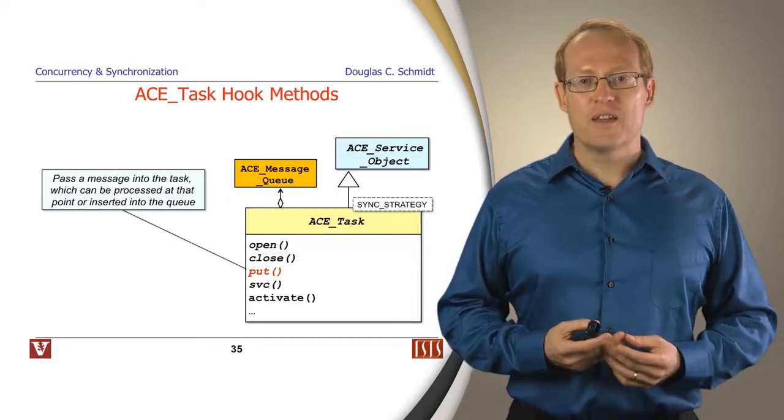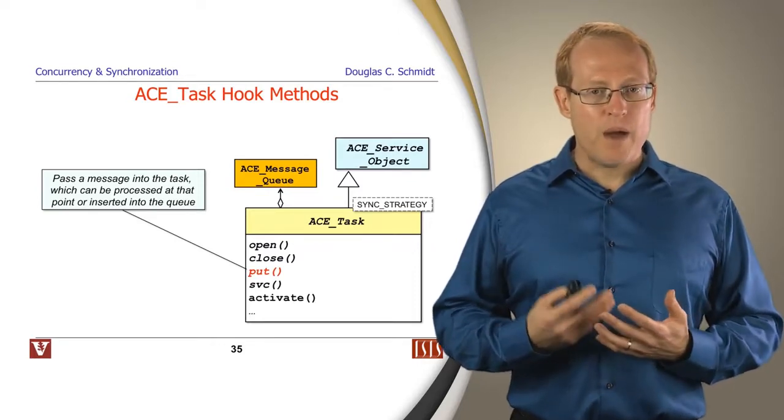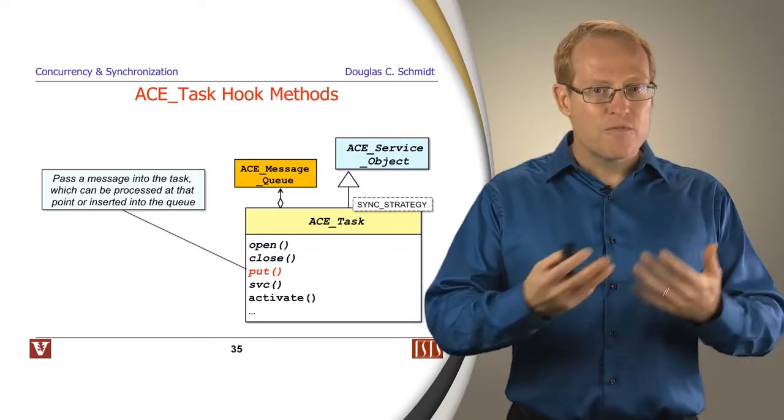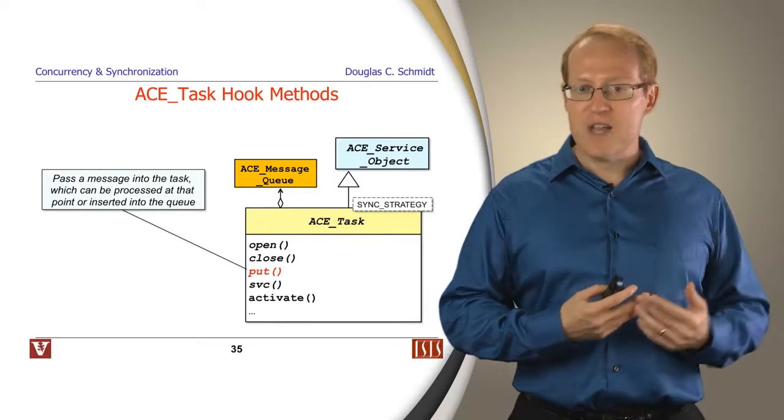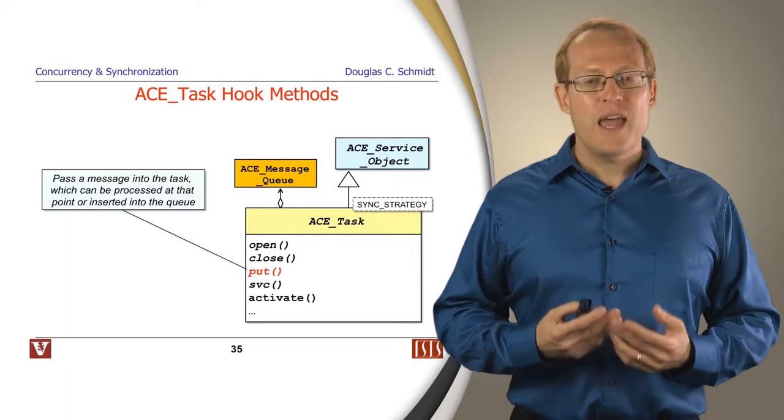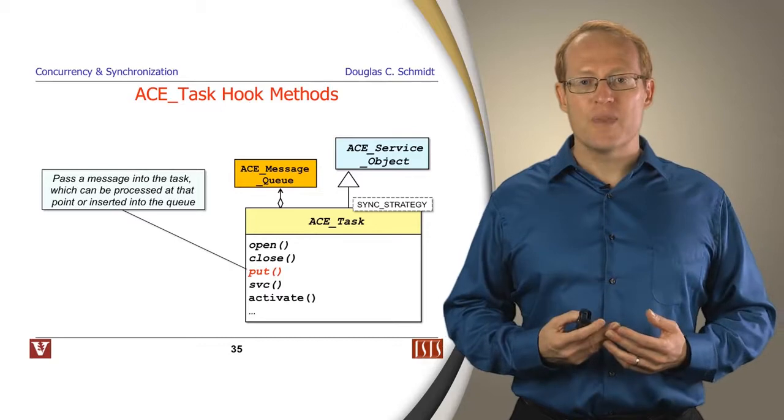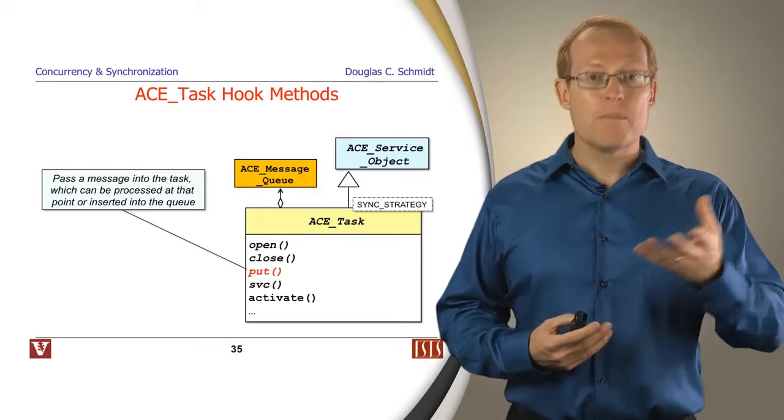Another very important method for ACE task is the put method. This method is used to pass a message from someplace else, perhaps another ACE task or some other part of the software like the reactive layer. And pass that message to the task, and then the task can figure out what to do with it. It might choose to perform the work immediately.